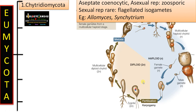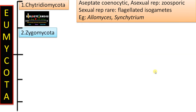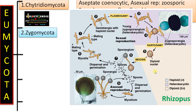To summarize Chytridiomycota: they have aseptate coenocytic hyphae. Asexual reproduction is by zoospores. Sexual reproduction is rare; if present, it is by flagellated isogametes. Examples include Allomyces and Synchytrium.